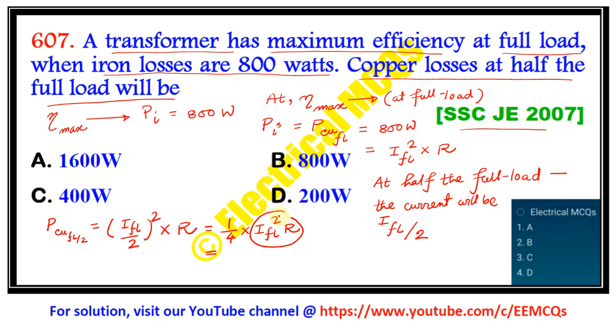This is equal to 200 watts. So here option D is the correct answer. 200 watts is the copper losses which is taking place at half the full load for the transformer.